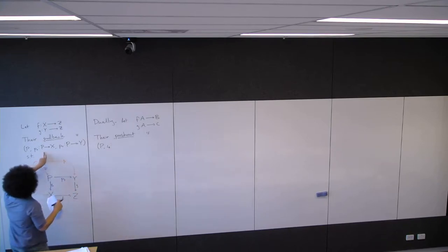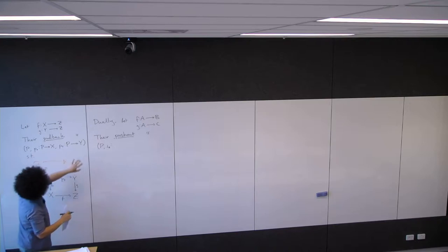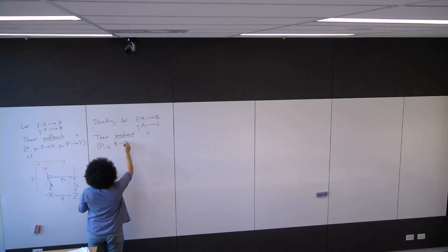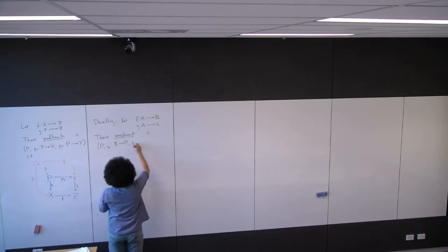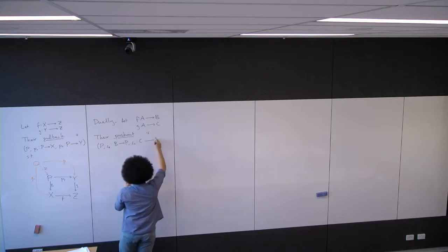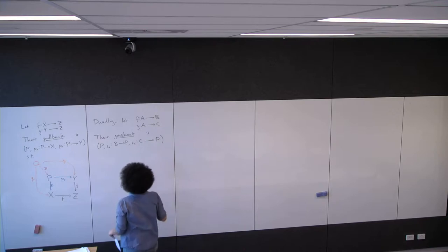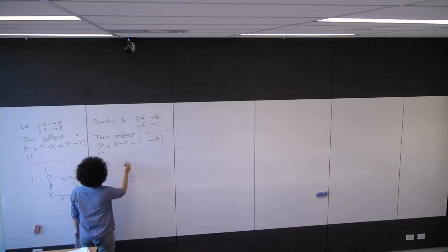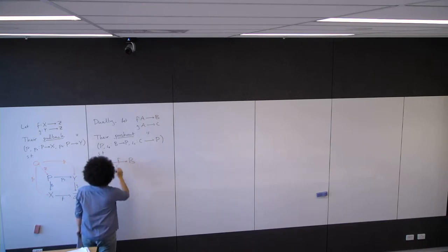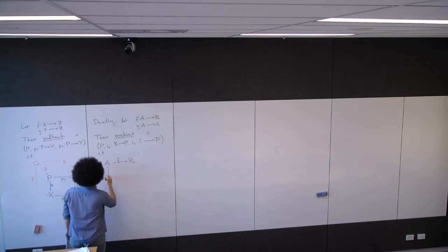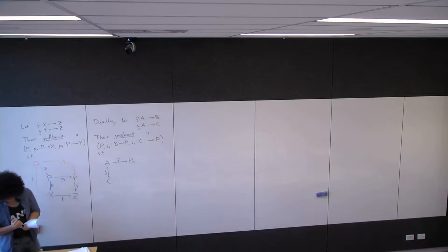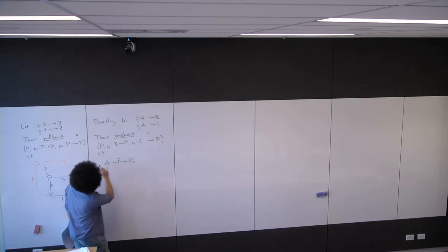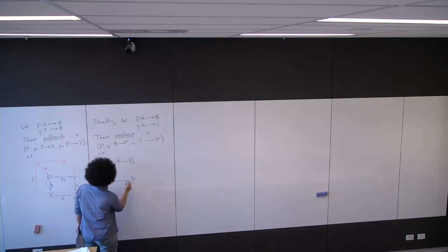Here I had maps going out of the object; now I'm going to have maps going into the object. So I want maps from B into P. Let's say ι_C from C into P, such that this time we have A, F from A to B, and G from A to C. Our pushout is going to satisfy that this square commutes.